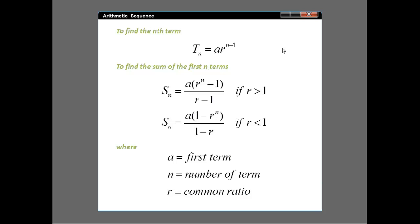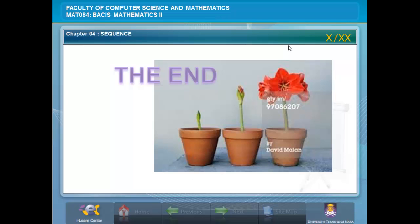To find the nth term: Tn = ar^(n-1). To find the sum of the first n terms: Sn = a(r^n - 1)/(r - 1) if r > 1, or Sn = a(1 - r^n)/(1 - r) if r < 1, where a is the first term, n is the number of terms, and r is the common ratio.